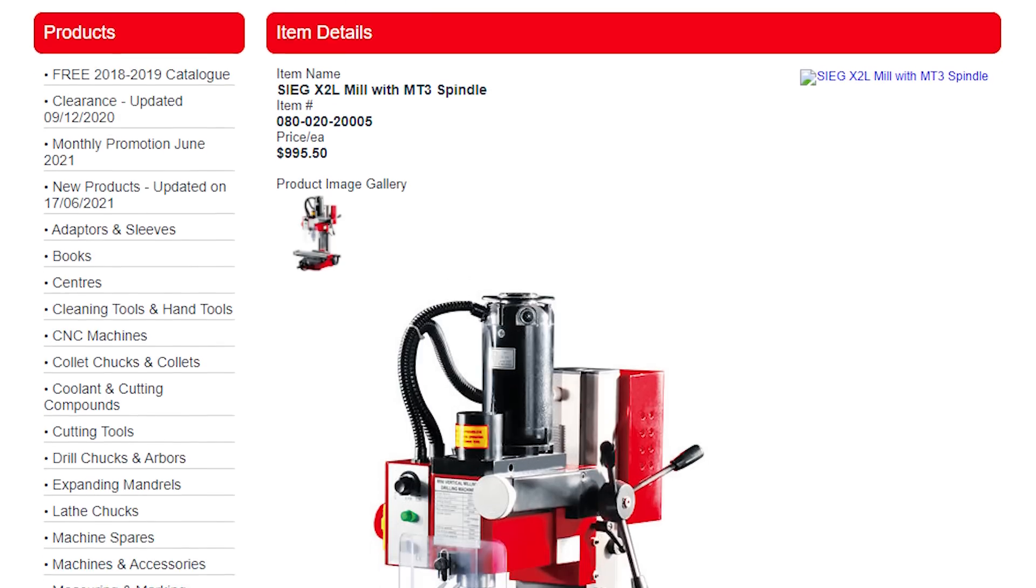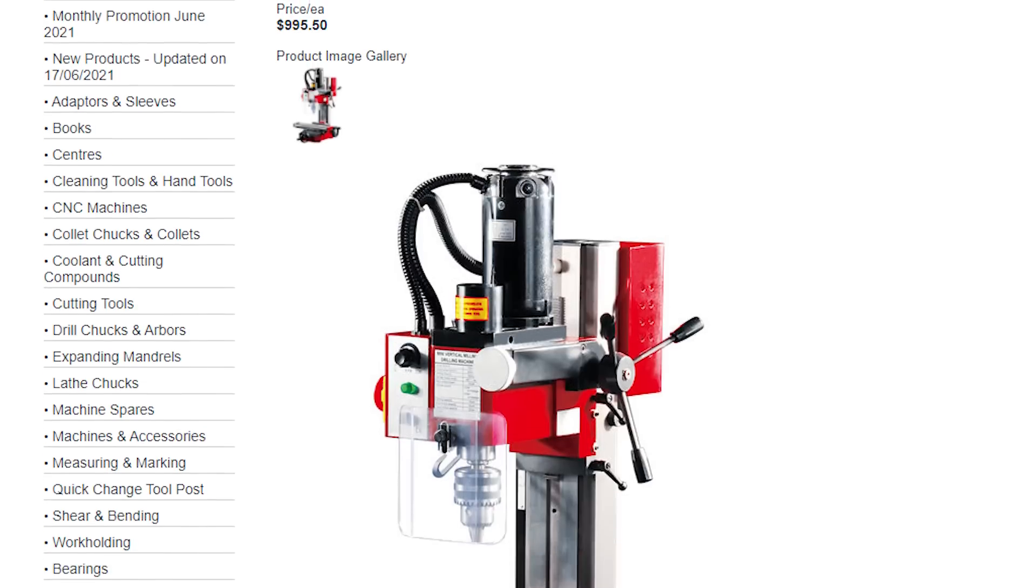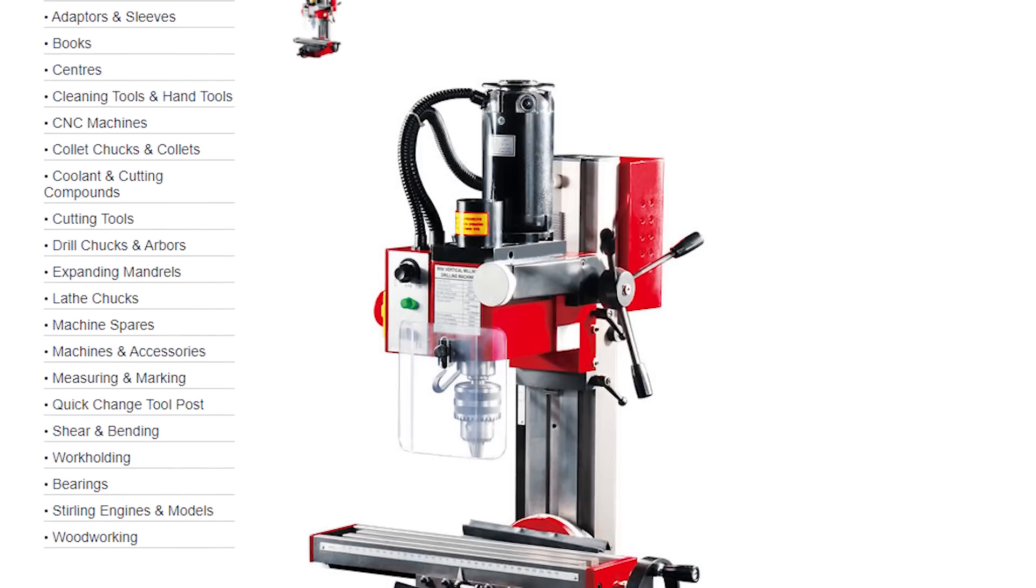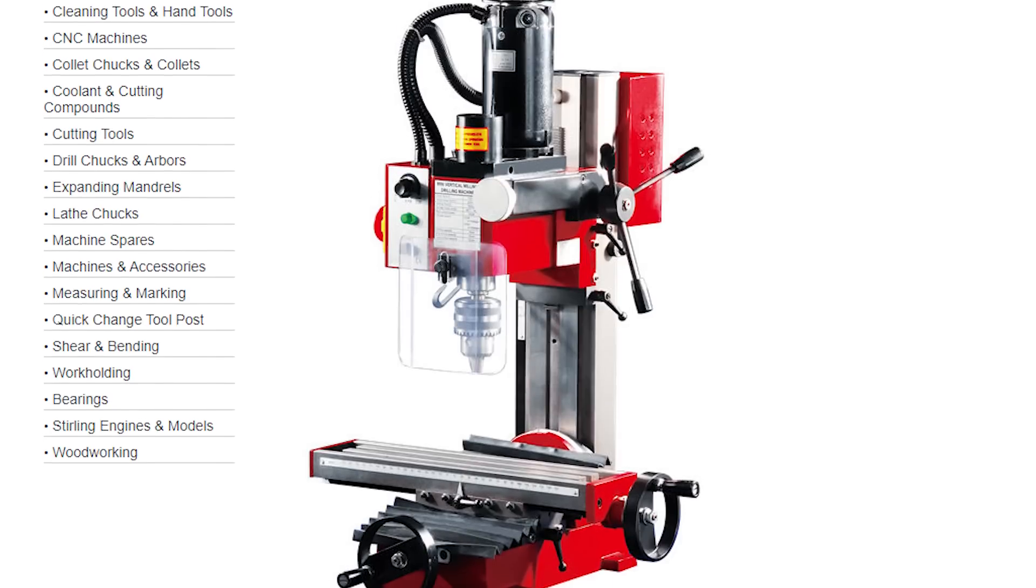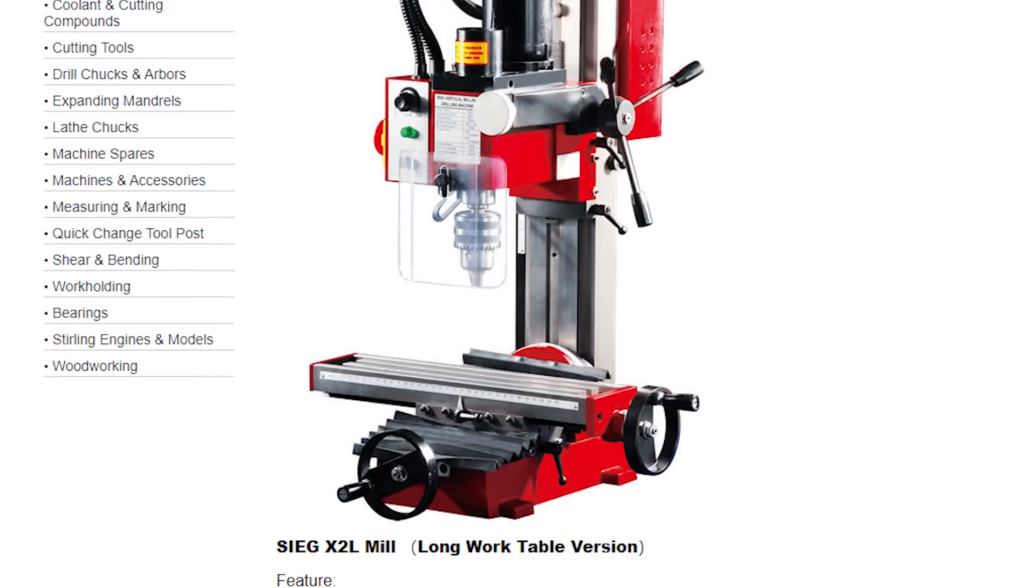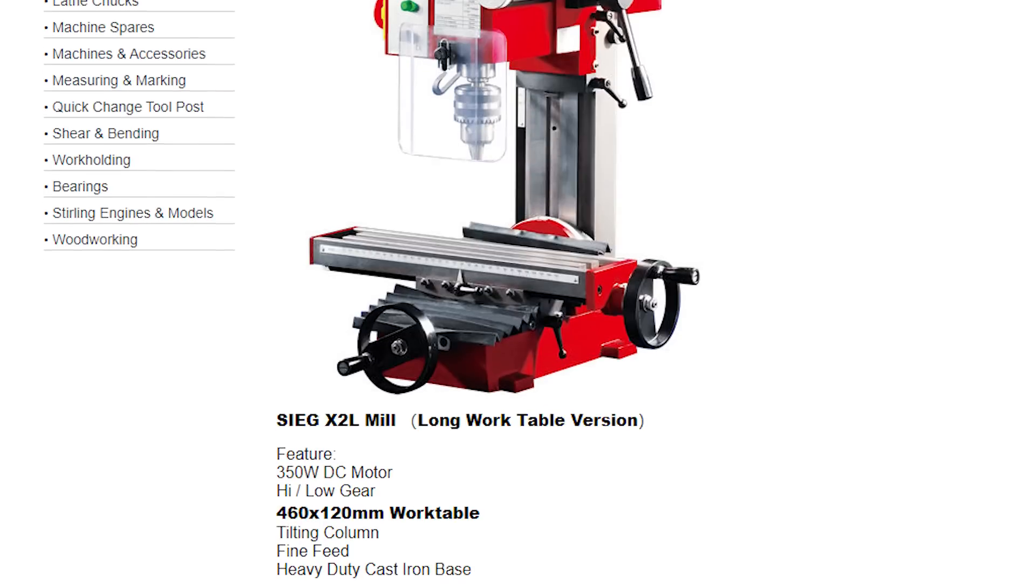For about $500 less, you can get the Sieg X2, or the X2L, and whilst I am sure those are very capable mills, I've seen a lot of people use them, the 2.7, in my opinion, is better in the long run, for two or three big reasons.